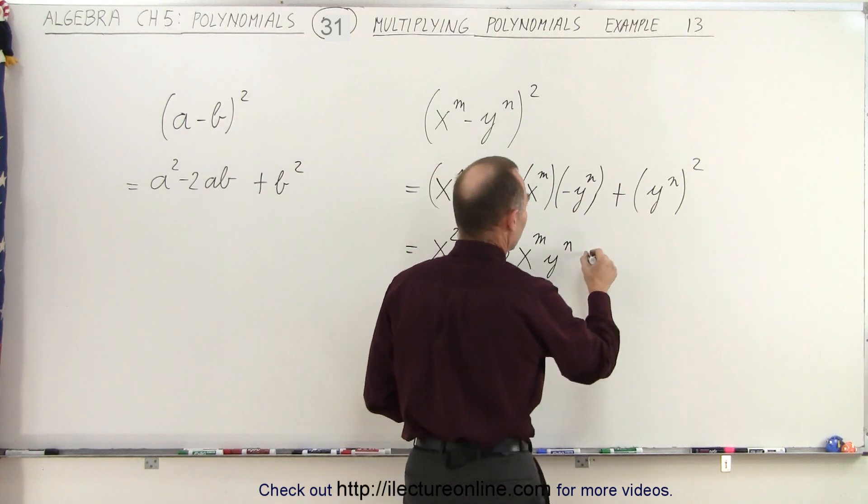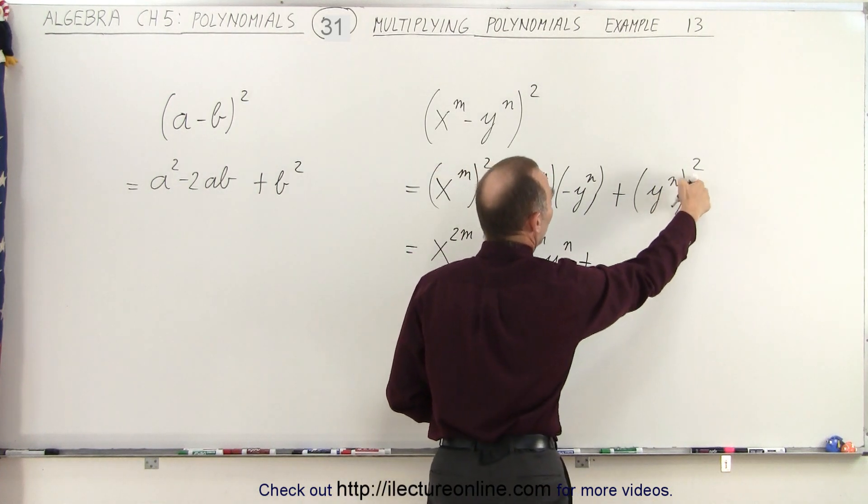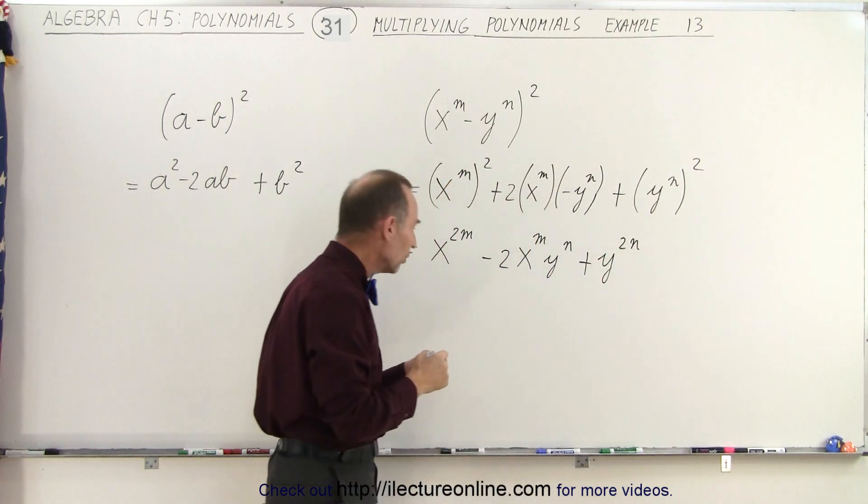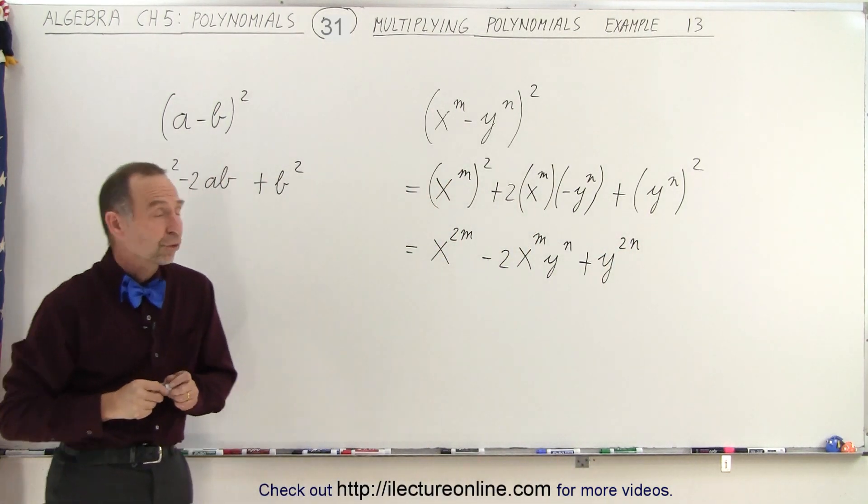And finally at the end, the same thing again: Y to the N squared. We have to multiply exponents, so this would be Y to the 2N. And that would then be the result of that binomial squared.